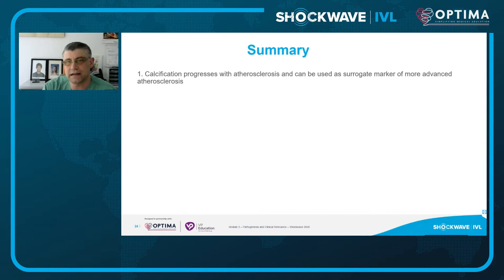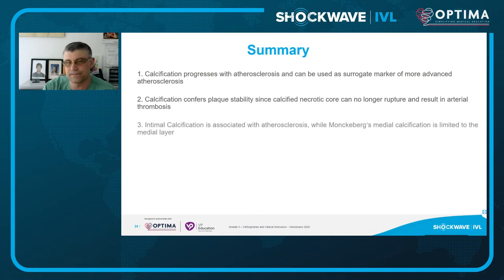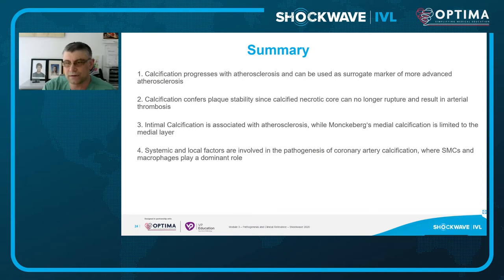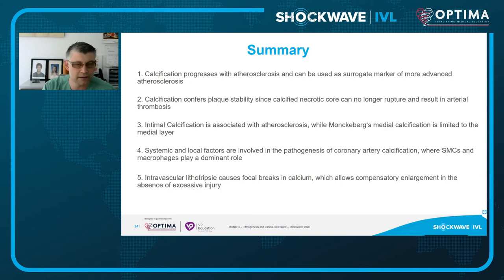In summary: calcification progresses with atherosclerosis and serves as a surrogate marker of more advanced disease. Calcification also confers plaque stability, since a calcified necrotic core can no longer rupture and cause arterial thrombosis. Intimal calcification is associated with atherosclerosis while Mönckeberg's medial calcification is limited to the medial layer. Systemic and local factors — especially smooth muscle cells and macrophages — play a dominant role. Intravascular lithotripsy likely causes focal breaks in calcium, allowing compensatory enlargement with less injury than other methodologies.